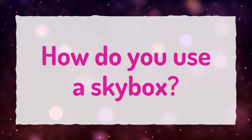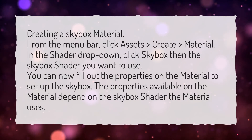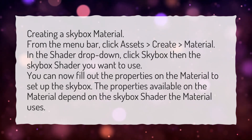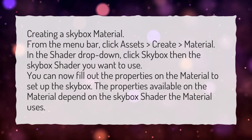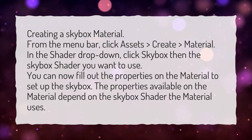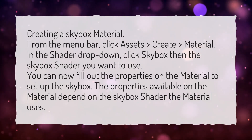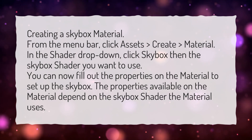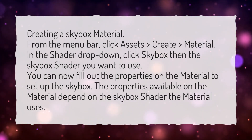How do you use a Skybox? Creating a Skybox Material: from the menu bar, click Assets, Create, Material. In the shader drop-down, click Skybox, then the Skybox shader you want to use. You can now fill out the properties on the material to set up the Skybox. The properties available on the material depend on the Skybox shader the material uses.